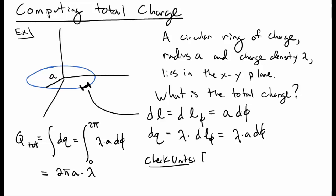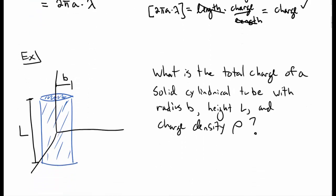A useful thing to do with units or problems like this is to check units. So the units of lambda, if you recall, are charge per length, and so the units of our result, 2 pi A times lambda, well, 2 pi is just a number, so A has units of length, lambda has units of charge per length, the units of length cancel, and so we just have units of charge, which is, of course, what we want for total charge.